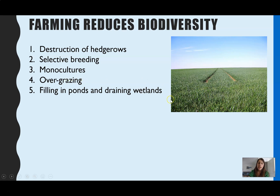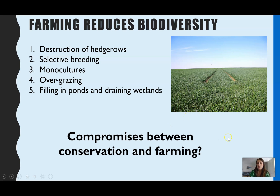Overgrazing — if animals are left to overgraze and you're reducing the plants too much, that has a knock-on effect on the food web. Sometimes ponds are filled in or wetlands are drained to provide space for farming. So what needs to be focused on is compromises, because farming does have to exist to provide food for humans, especially as the population is increasing, so we have to compromise to conserve biodiversity to an extent while enabling farming.